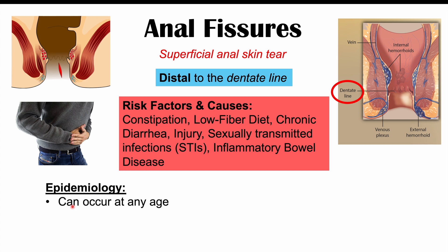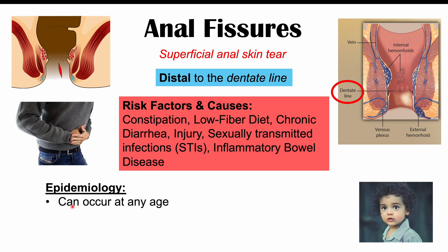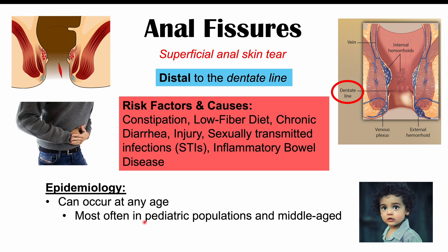Anal fissures can occur at any age, but they're most often going to occur in pediatric populations — very young kids and toddlers. If toddlers experience too much constipation, they can develop tears to the anal skin. We can also see it in middle-aged patients. This is a relatively common condition, with hundreds of thousands of new cases occurring each year in the United States alone.